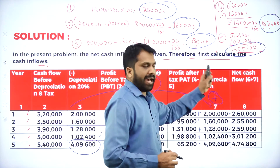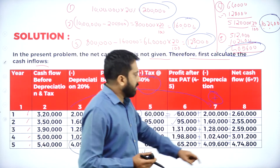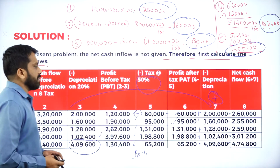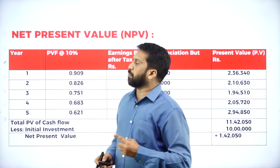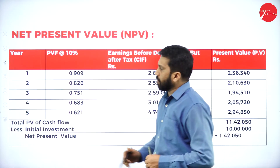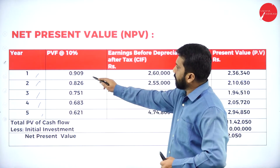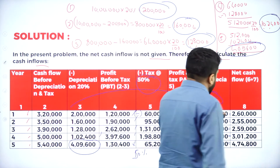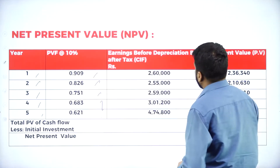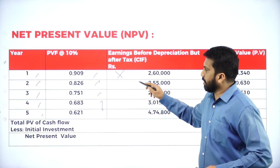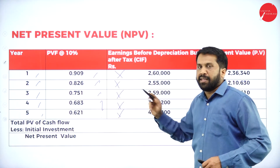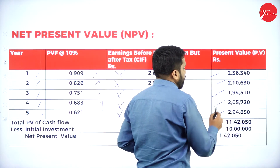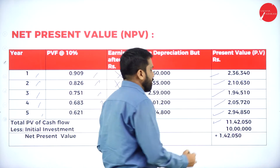You got your net cash flow. Sometimes in a question this net cash flow will only be given directly; if it is not given, you are supposed to find it out. Now for NPV, write years 1 through 5. The net cash flow answers are: 2 lakh 60, 2 lakh 55, and 2 lakh 59. Multiply each by the discount factor at 10 percent, and you get present values: 2 lakh 36, 2 lakh 21, 2 lakh 10, 1 lakh 94, 2 lakh 05.